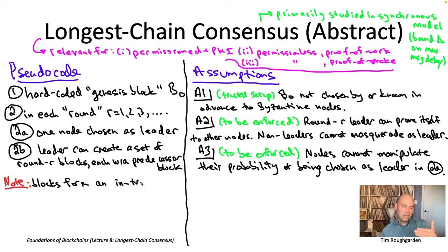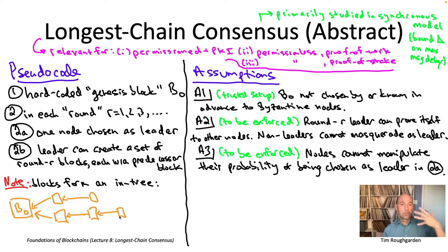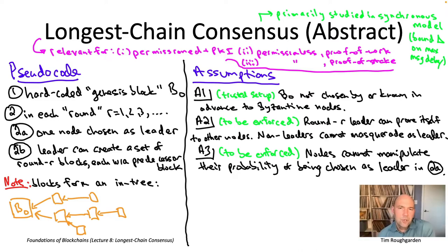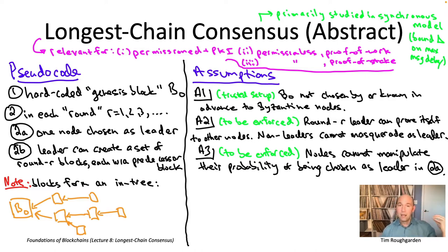That concludes the description of the basic protocol. We can fruitfully visualize the data structure being grown as an in-tree — a tree in the sense of a connected, acyclic, directed graph where all edges are directed toward the genesis block. The genesis block acts as the root. We visualize blocks as vertices with out-degree exactly one, each with a directed edge toward its predecessor. In the orange picture, there's a single arrow pointing out of every block except the genesis block, but in-degree can be large.